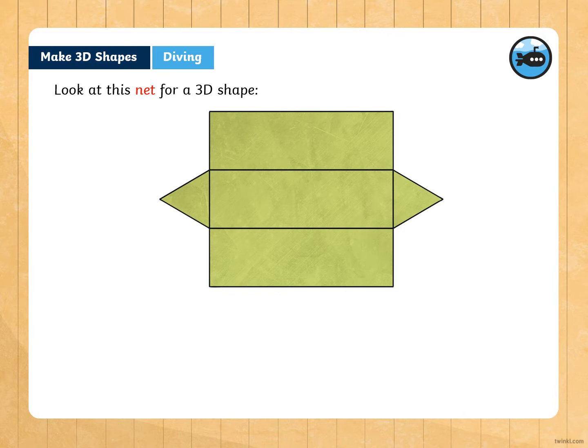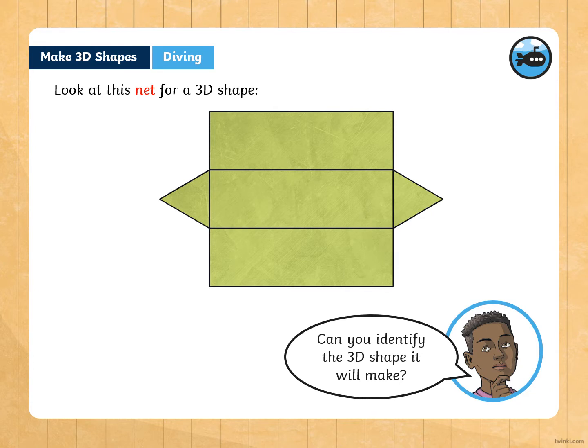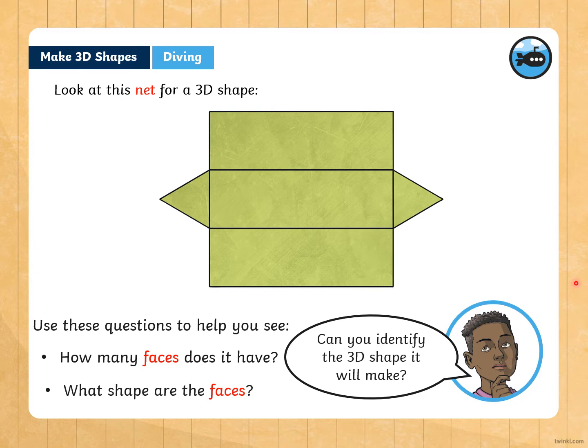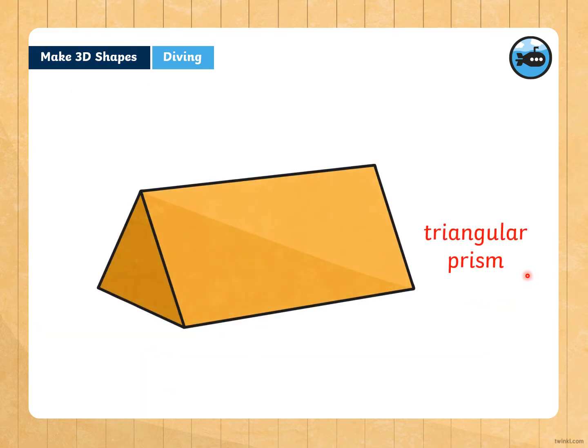Look at this net for a three-dimensional shape. Can you identify the 3D shape it will make? Use these questions to help you see. How many faces does it have? We have 1, 2, 3, 4, 5. We have 5. And then, what shape are the faces? We have 2 triangles and 3 rectangles. This is a triangular prism. 2 triangles and 3 rectangles.